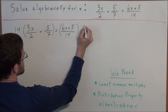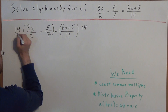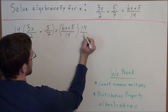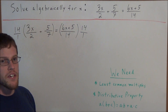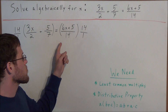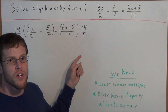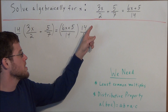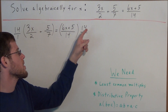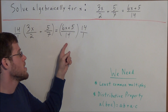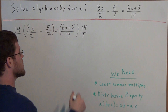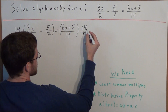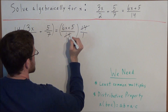I'm going to write 14 as 14 over 1 so we can really illustrate this concept of fraction multiplication. Now we're going to take care of the right side of this equation first, because it's a little bit easier to simplify. We have a 14 in the numerator and a 14 in the denominator of the two fractions we're multiplying, so we can simplify — 14 divided by 14 is 1, so we cancel out these 14s.